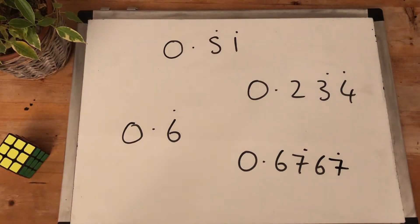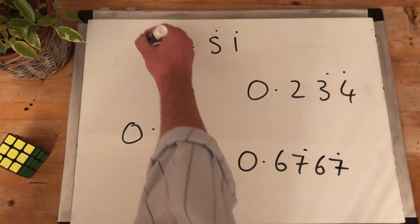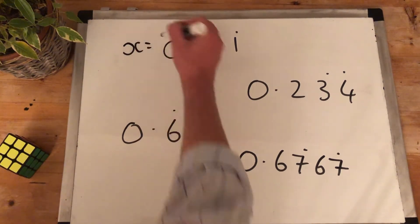What's up YouTube? In this video here we will be learning how to turn recurring decimals into fractions. Our first step is a really nice first step because it's easy. You literally just do this: X equals. That's step one.